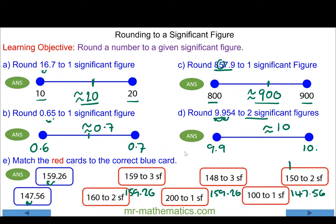Finally, for three significant figures, the two doesn't round up the nine because it is less than five, so that becomes approximately 159 to three significant figures. And the seven is rounded up to an eight because of a five next to it, so that becomes approximately 148 to three significant figures. Thank you for watching, I hope you found that useful.